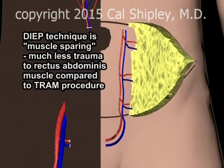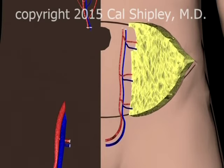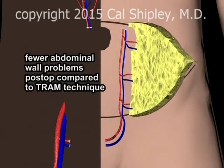In the TRAM technique, the rectus muscle is completely divided and rotated into the upper abdomen. As a result, patients undergoing the TRAM technique often have problems with abdominal wall weakness and herniation postoperatively.